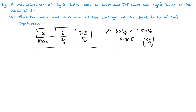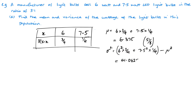That gives a mean of 6.375, or 51/8. For the variance, we calculate the sum of probability times x squared: 6² × (3/4) + 7.5² × (1/4), then subtract the mean squared. This gives 41.0625 − 6.375², which equals 27/64, or approximately 0.422 to 3 significant figures.